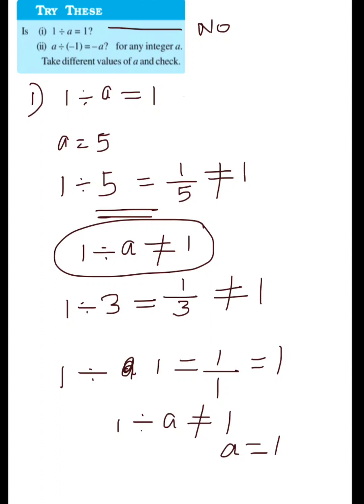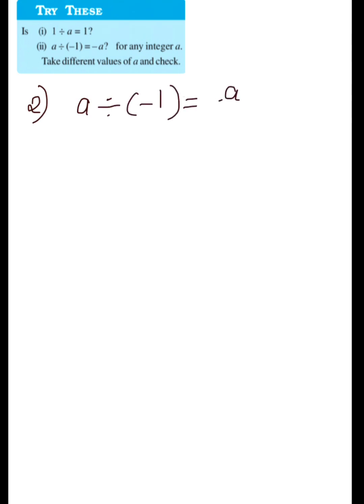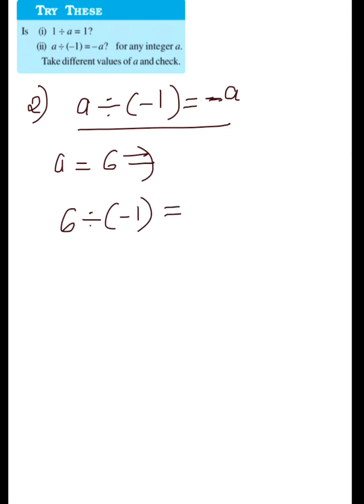Now let's see the second question: A divided by minus 1 equals minus A. You have to take different values of A and check. So let's check with A equal to 6 — if A equals 6, then the expression becomes 6 divided by minus 1.